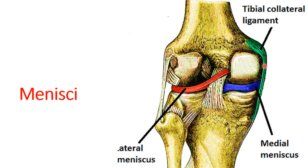The medial collateral tibial ligament is attached to the medial condyle of the femur and the medial surface of the shaft of the tibia. It is firmly attached to the medial meniscus. An important difference is that the medial collateral is firmly attached to the meniscus, while the lateral collateral is separated by the popliteus muscle tendon. There is also the oblique popliteal ligament, derived from the semimembranosus tendon, which strengthens the posterior aspect of the capsule.